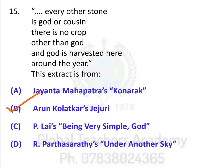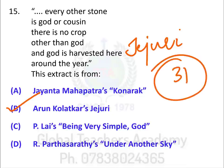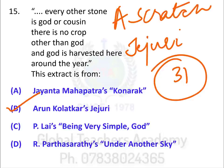The answer is B — Arun Kolatkar's Jejuri, and the name of the specific poem is 'A Scratch.' Arun Kolatkar is a very important poet from Maharashtra who writes in both Marathi and English. His first book of English poetry was Jejuri, a very important compilation containing 31 poems.